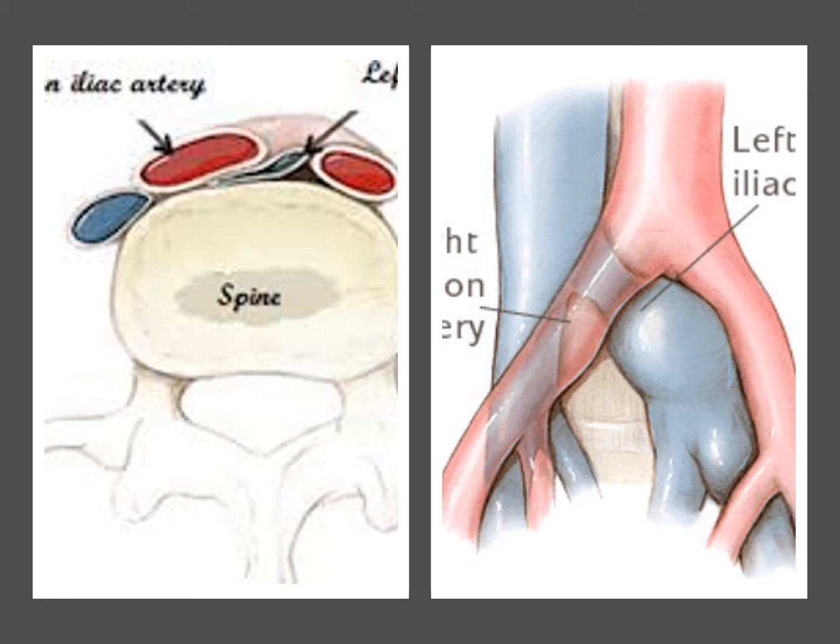When I was initially taught about May-Thurner Syndrome many years ago, I was taught that it was when the left common iliac vein passed under the right common iliac artery next to the spine, creating an extrinsic compression between the spine and the artery — the vein getting squished between them. That squishing caused an obstruction, and sometimes because of that obstruction, the patient would develop a deep venous thrombosis or venous insufficiency in the left leg.